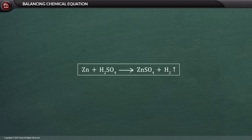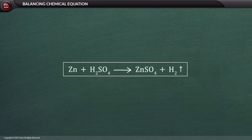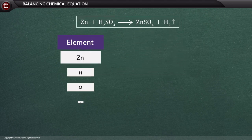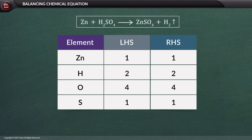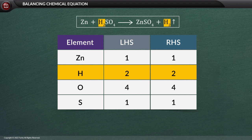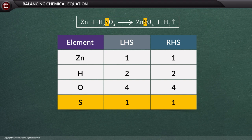Let us take another skeletal chemical equation and try to balance it: Zn + H₂SO₄ → ZnSO₄ + H₂. Let us write the number of atoms of each element on LHS and RHS. Each atom is equal in number on both sides: one Zn atom on LHS and RHS, two H atoms on both sides, four O atoms on each side, and one S atom on each side. Thus the reaction is already balanced.